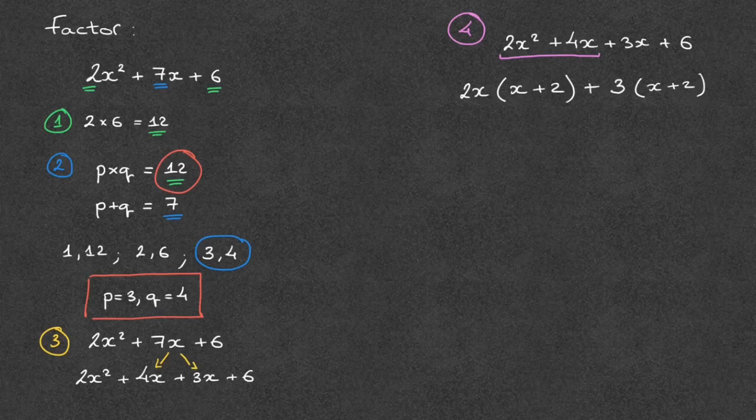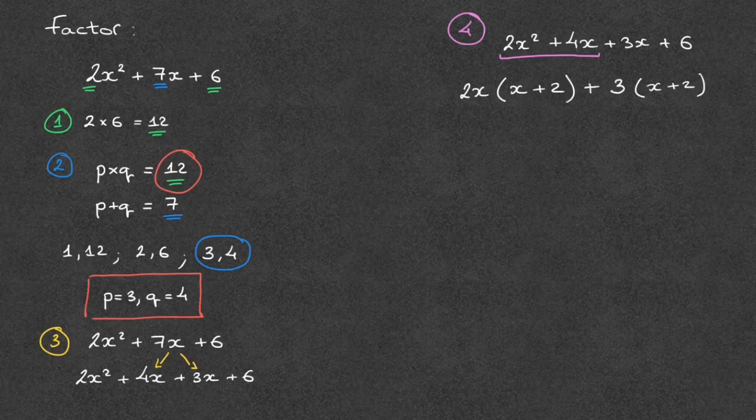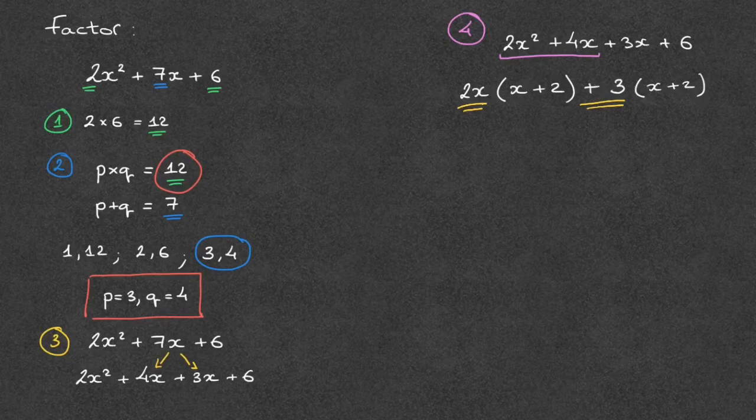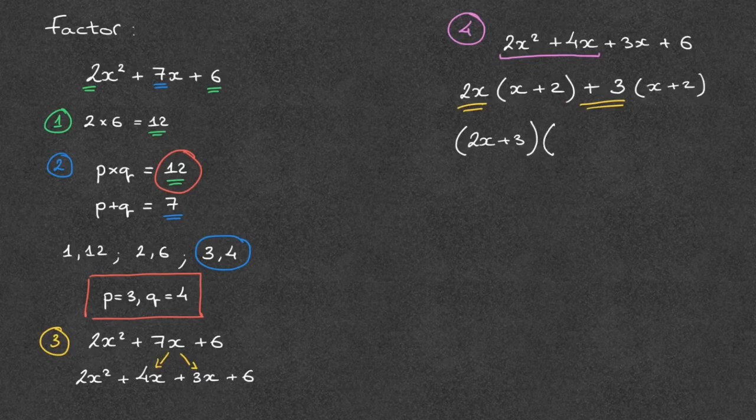Now that that's done, all we have to do is write every single thing we see which isn't inside parentheses, so 2x and plus 3, inside its own pair of parentheses. Here's what I mean. We write 2x and plus 3 inside its own pair of parentheses. So that would be in parentheses, 2x plus 3. And that then multiplies the x plus 2 parentheses that we had in the line above it.